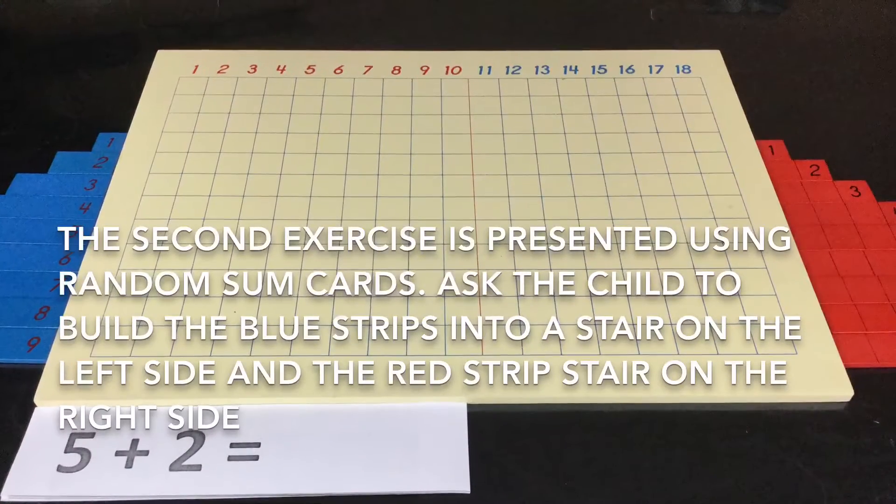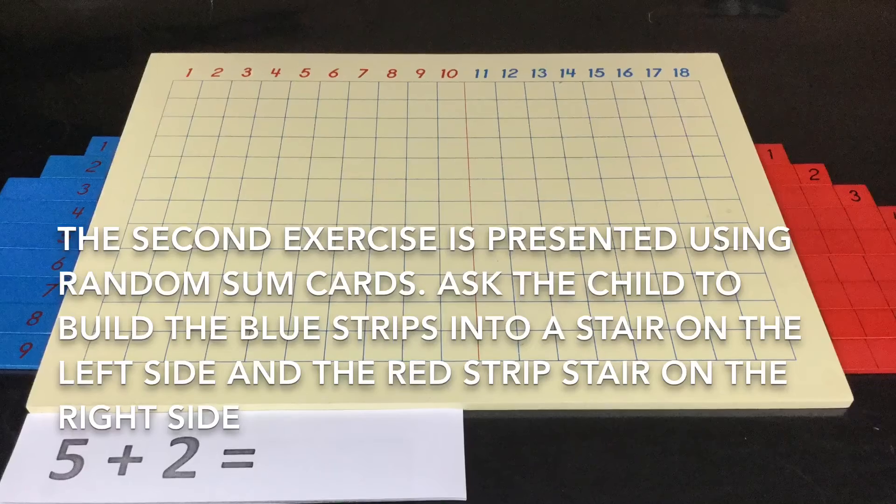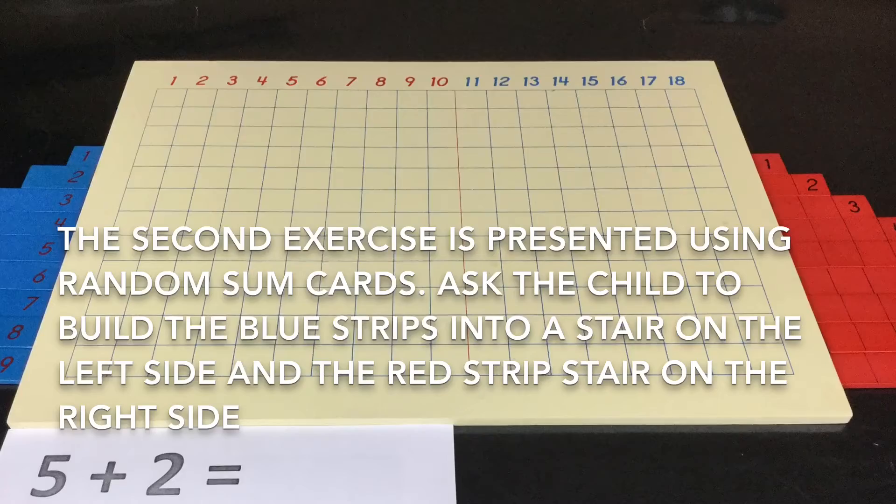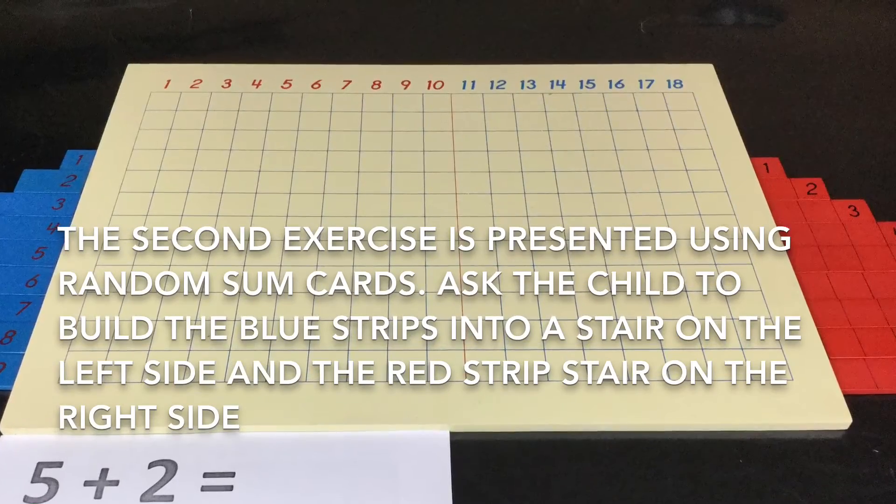Presentation two. The second exercise is presented using random sum cards. Ask the child to build the blue strips into a stair on the left side and the red strips on the right side.